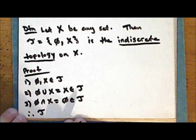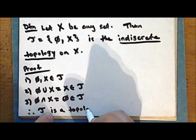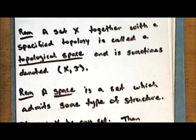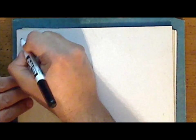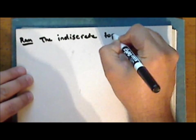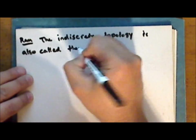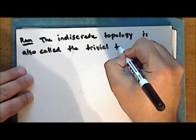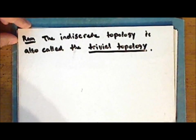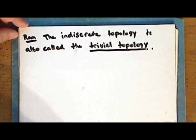And so the collection tau consisting of the empty set and the entire set only is a topology on the set X, which we call the indiscrete topology. The indiscrete topology is also called the trivial topology, and this is because it is the smallest topology possible on a given set — that is, it is the most exclusive collection of subsets of a given set that constitutes a topology on the set.